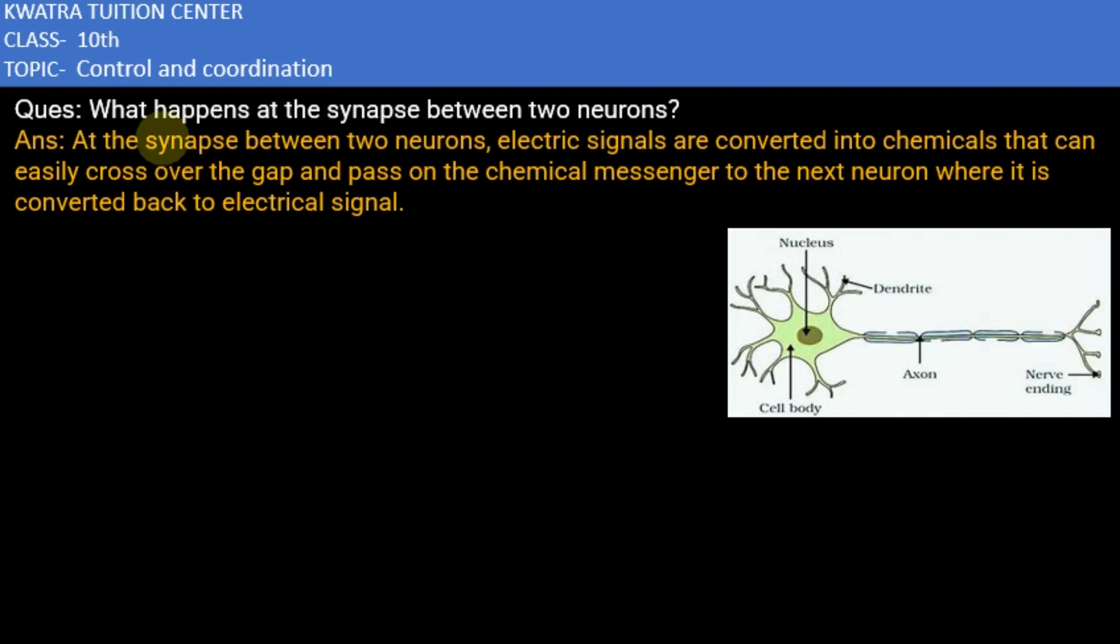Hello everyone, the question is what happens at the synapse between two neurons. So here we have asked what is synapse between two neurons, how to transfer information. So this is the structure of neuron.